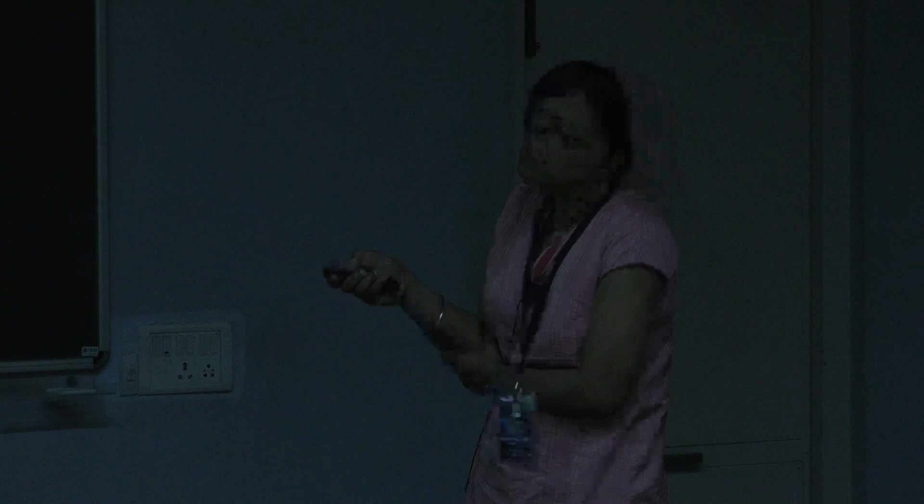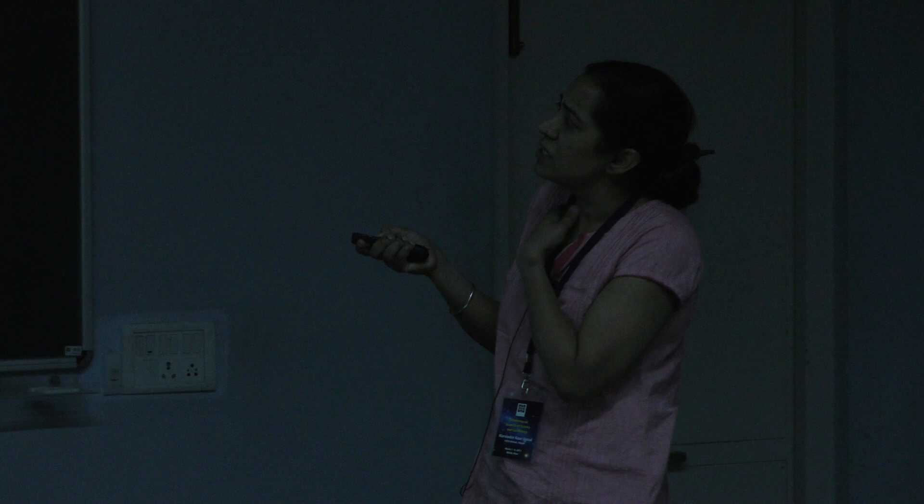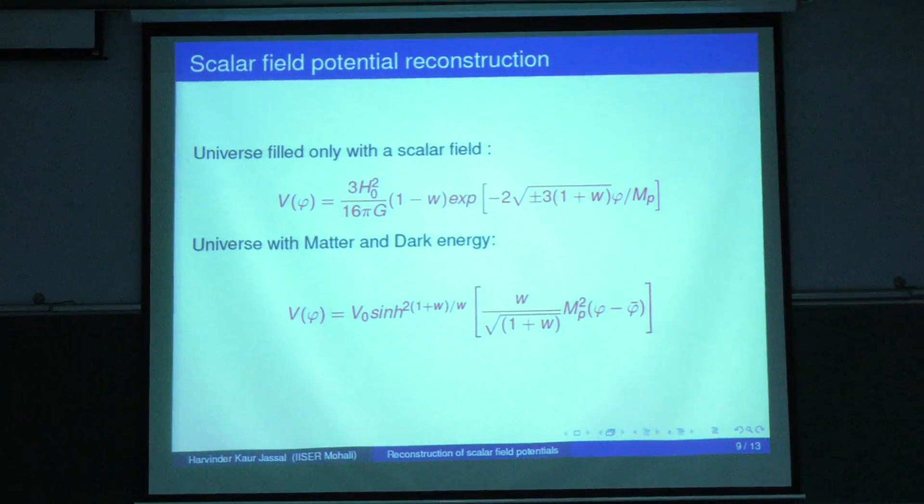Since a little bit of W less than minus one is also allowed, these are the phantom models in which there is a negative kinetic energy. These models have a problem in that structures try to rip themselves off in finite time. These phantom models are also related to earlier work on C-fields, which were proposed to keep a static universe in place. Let's see what happens if we want observations to tell us what form of scalar field potential is allowed.